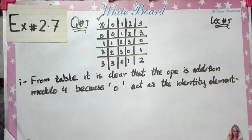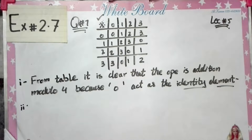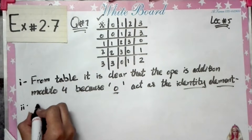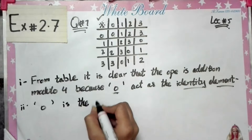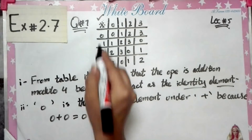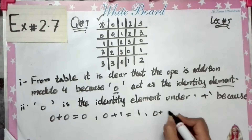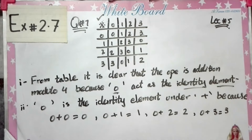0 acts as identity element — because of 0, there is no difference in other values. We add any value and get that same value back. That is why we say 0 is the identity element. The identity element is 0. Under addition: 0+0=0, 0+1=1, 0+2=2, 0+3=3.